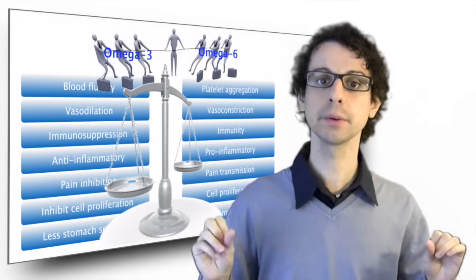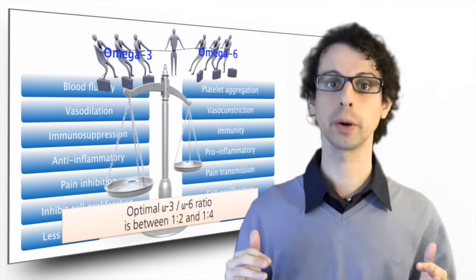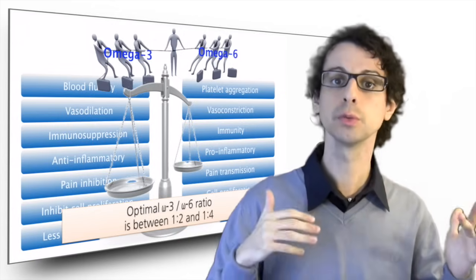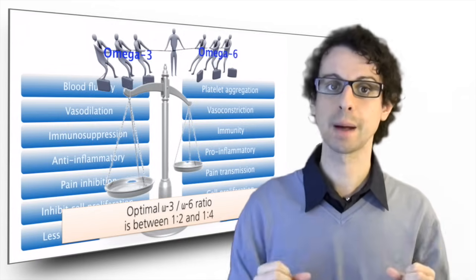The ideal omega-3 to omega-6 ratio is between 1 to 2 and 1 to 4, meaning for every 2 to 4 grams of omega-6 in our diet, we want at least 1 gram of omega-3.